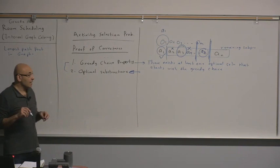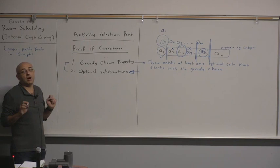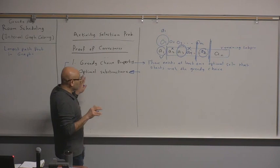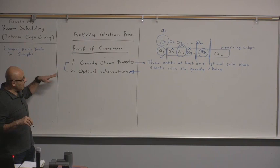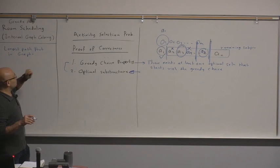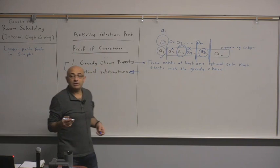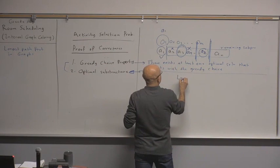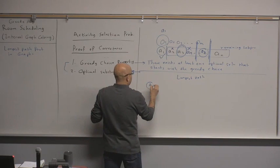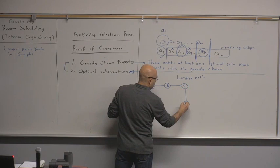To appreciate what optimal substructure is and why it's needed, I'll give an example of a problem that does not satisfy it — so you understand why the activity selection problem satisfies the properties needed for greedy algorithms. Consider the longest path problem in graphs. Consider this graph with vertices A, B, C, D, E.